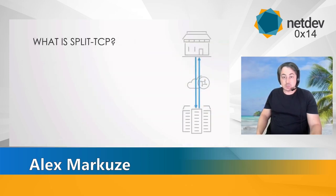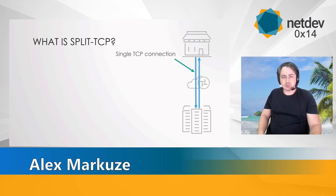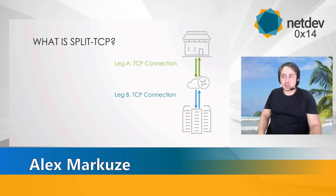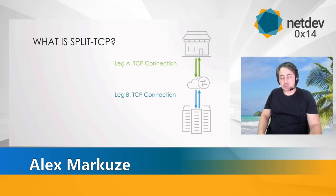What is split TCP? Split TCP is a well-known technique for enhancing TCP connections. A single TCP connection is terminated on a proxy, and two new TCP connections are created. Each TCP connection is independent and may have different configurations, different congestion control, and different setups. Each has its own control loop and congestion control, completely separate.